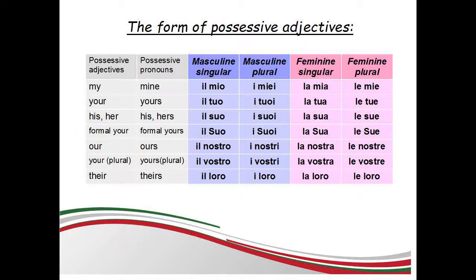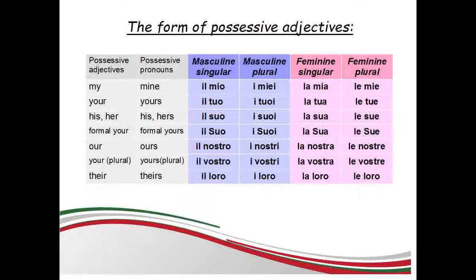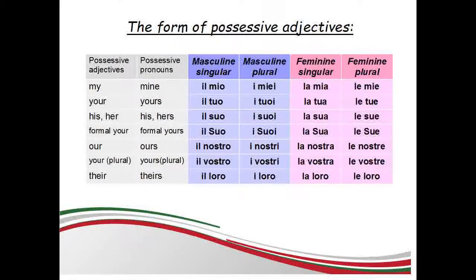The forms of the possessive adjectives for masculine singular are: I, my — il mio. Your — il tuo. His, her — il suo. Formal your — il suo. Our — il nostro. Your — il vostro. Their — il loro.